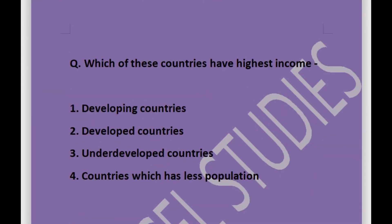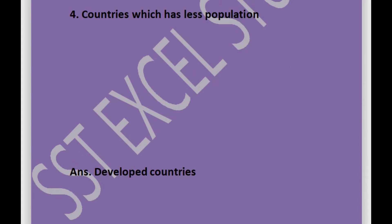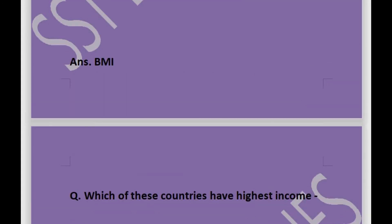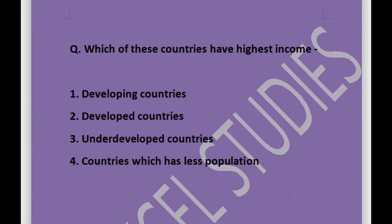Next question: which of these countries have the highest income? Options are developing countries, developed countries, underdeveloped countries, or countries which have less population. The answer is developed countries — developed countries have the highest income.